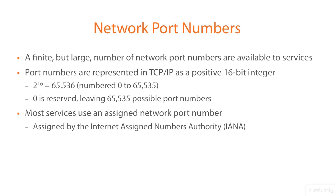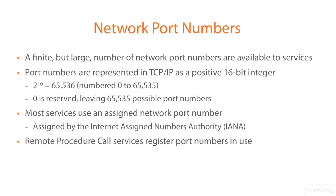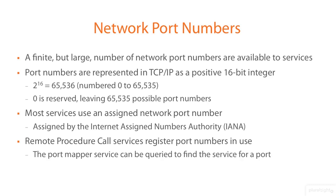On Unix systems, port assignments are listed in the /etc/services file. Some network services use seemingly random port numbers — these are typically part of a remote procedure call service, and each registers its port number to avoid conflicts with other services. So how do clients know what port to use? They ask the port mapper, which maps the service to the port number it's currently using. On Unix systems, the port mapper runs on the well-known port 111. On Windows, it's port 135.